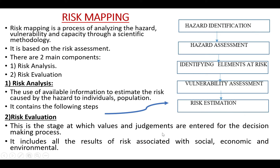Next is risk mapping, which is a process of analyzing the hazard, vulnerability, and capacity through a scientific methodology, based on risk assessment. It has two components: risk analysis and risk evaluation. Risk analysis is the use of available information to estimate the risk caused by hazards to individuals and populations — it involves hazard identification, hazard assessment, identifying elements at risk, vulnerability assessment, and risk estimation. Risk evaluation is the stage at which values and judgments are entered for the decision-making process, covering social, economic, and environmental results of risk.